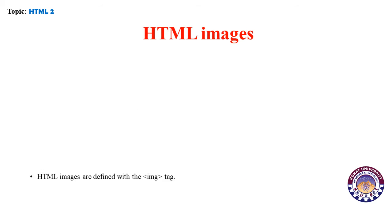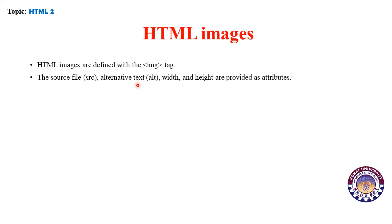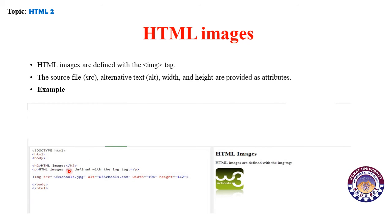HTML images are defined with the img tag. The source file (src), alternative text (alt), width, and height are provided as attributes. In the example: img src gives the address where the image is taken from. Alt provides an alternative source if the image is not available. We can also specify the height and width of the image.